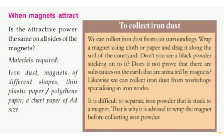When magnets attract, is the attractive power the same on all sides of the magnet? The materials required are: magnets of different shapes, iron dust, thin plastic paper, polythene paper, and chart paper of A4 size. To collect iron dust, we can collect it from our surroundings — wrap a magnet using cloth paper and drag it along the soil of the courtyard.